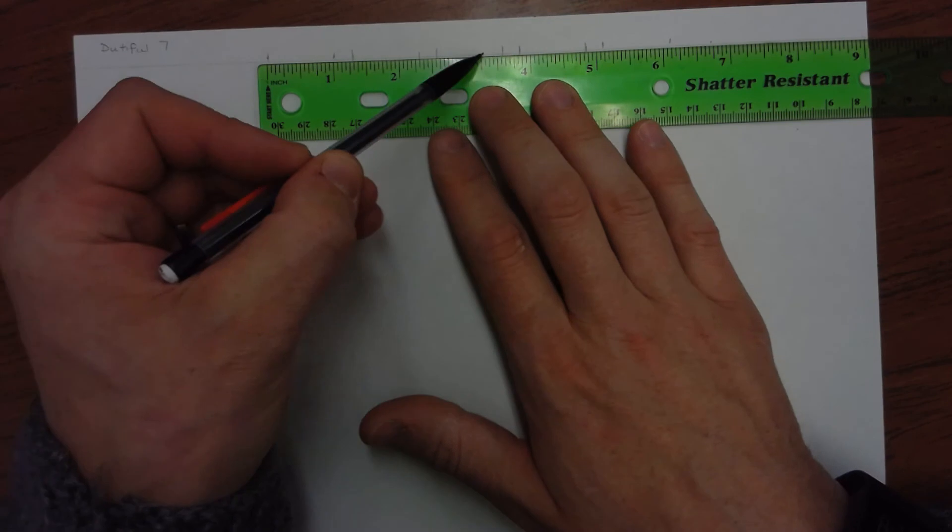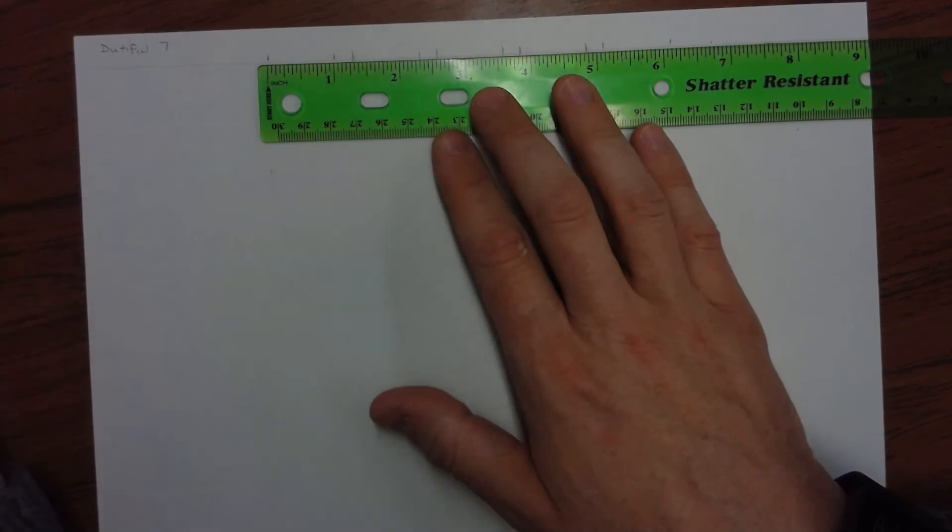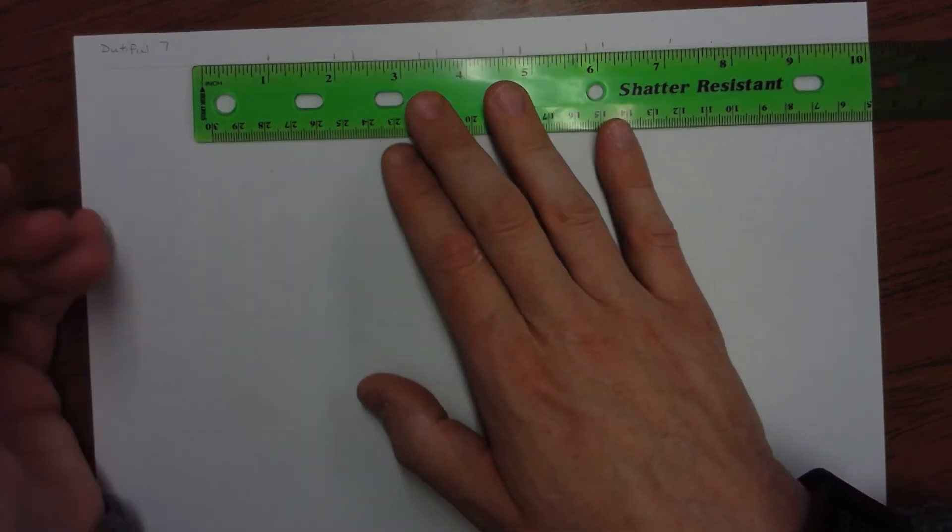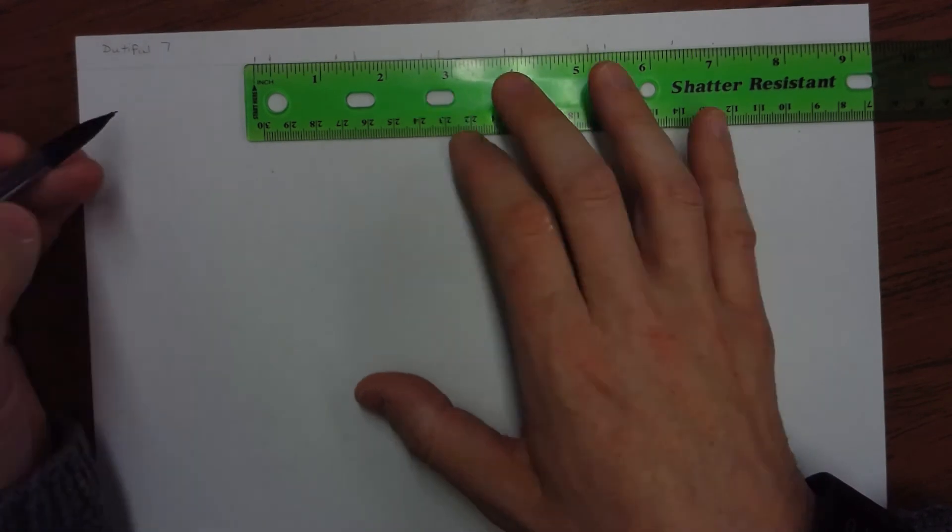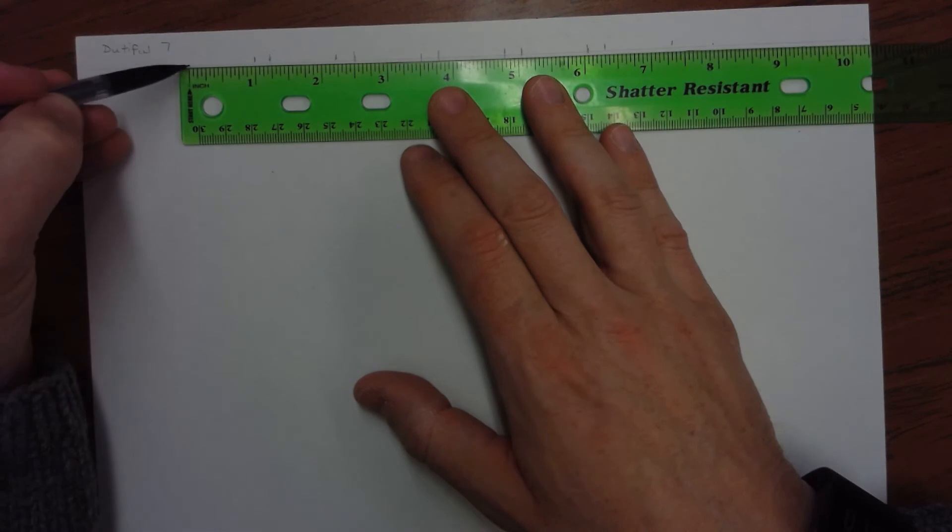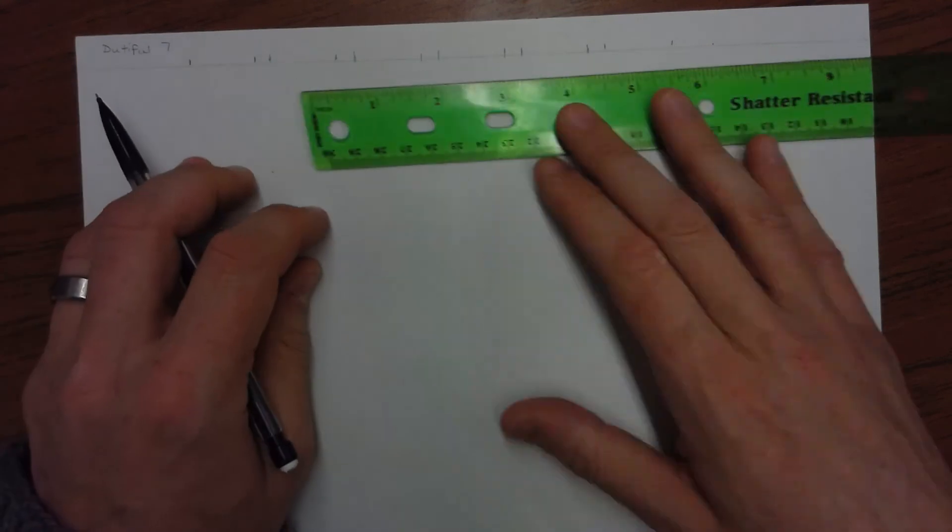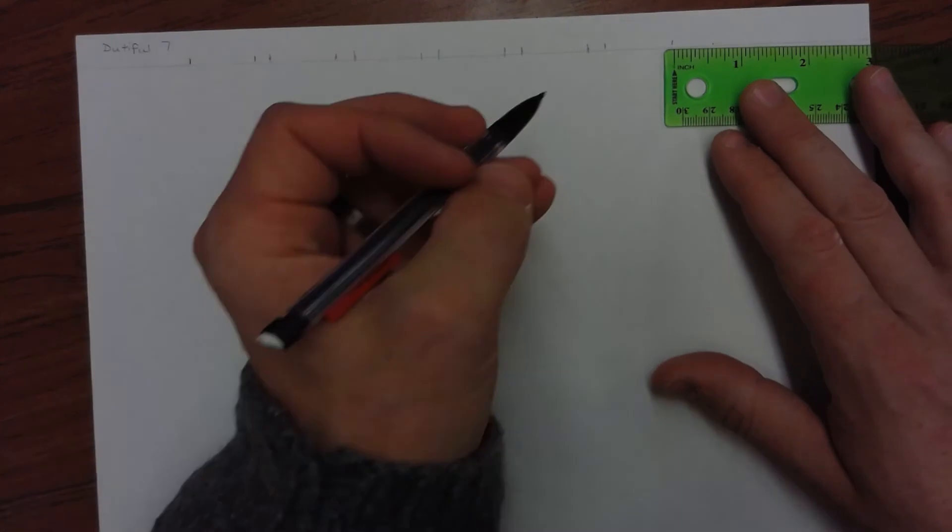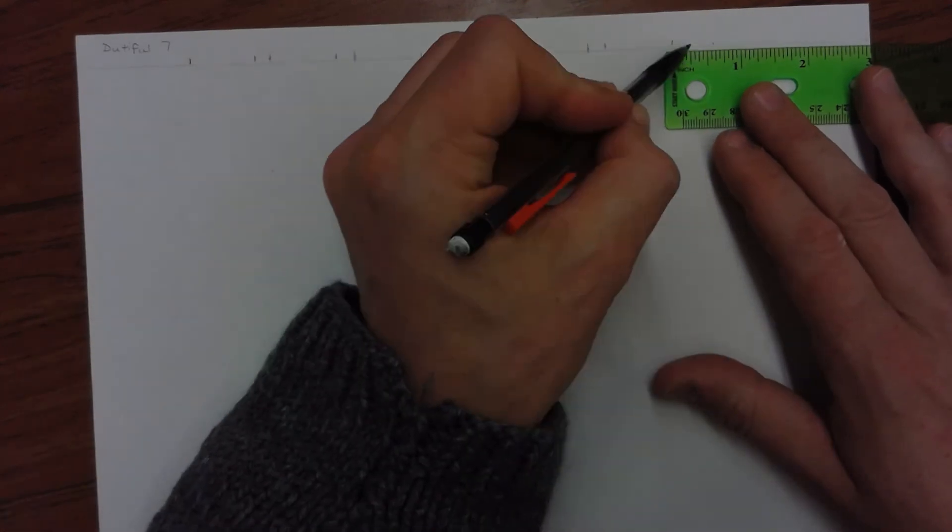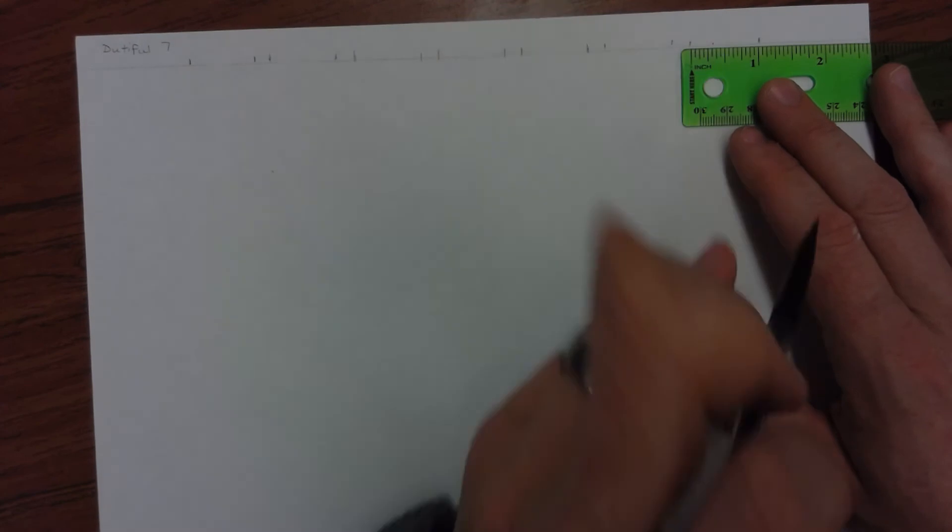So now I have one, two, three, four, five letters. Another quarter of an inch. And another inch. Quarter of an inch. And an inch.